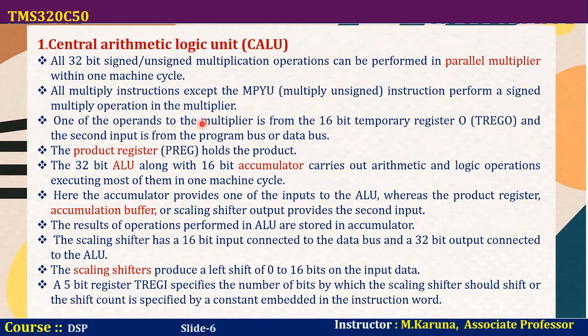One of the operands to the multiplier is from the 16-bit temporary register T-register zero, and the second input is from the program bus or data bus. The product register holds the product after performing the multiplication. The ALU can perform operations on 32-bit data along with the 16-bit accumulator, which carries arithmetic and logical operations, executing most of them in one machine cycle. The accumulator provides one input to the ALU, while the product register, accumulator buffer, or scaling shifter output provides the second input. After performing any operation, the result is stored in the accumulator.